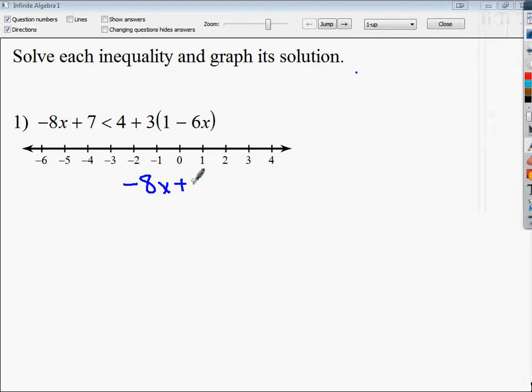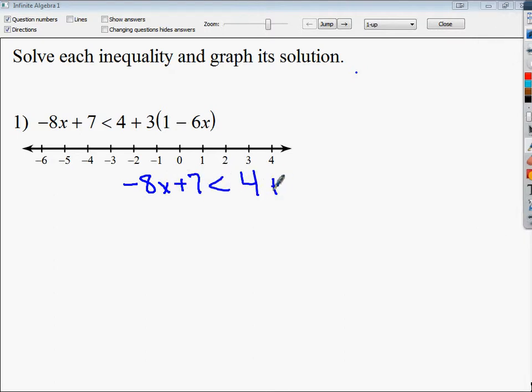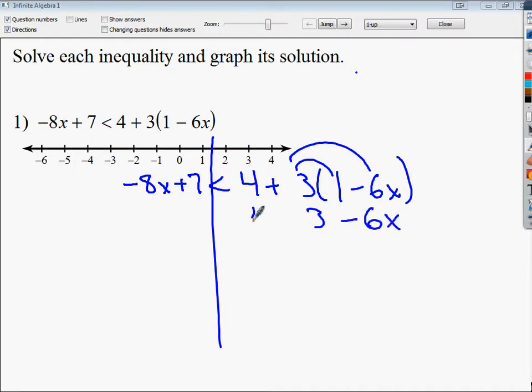Let's look at the first one. Negative 8x plus 7 is less than 4 plus 3 times the quantity 1 minus 6x. Draw your line here. You have to do the distributive property first, just because of the order of operations. I tend to bring everything down so I can see it. I'm looking for like terms. The 4 and the 3 are both like terms. Remember, do not add 4 and 3 before you multiply because distributive property comes first.